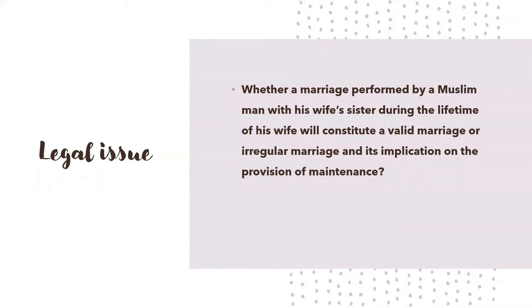The legal issue was whether a marriage performed by a Muslim man with his wife's sister during the lifetime of his first wife will constitute a valid marriage or an irregular marriage, and its implication on the provision of maintenance. Dividing the legal issue into two: first, whether an Islamic marriage with a wife's sister shall be held void; and second, if the marriage with a wife's sister may be irregular or void, whether she is entitled to maintenance after divorce.